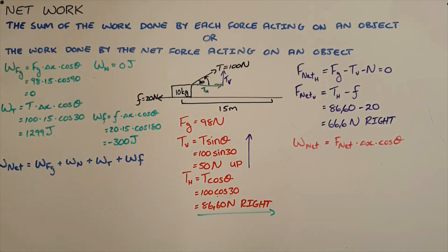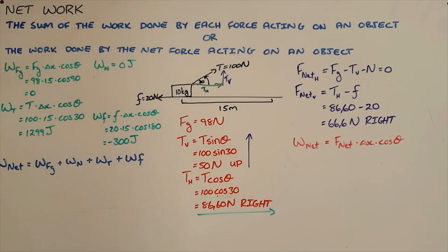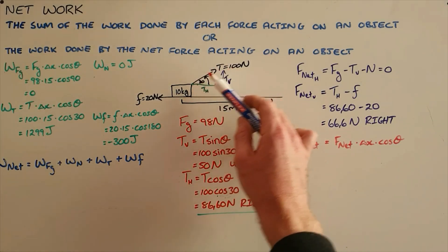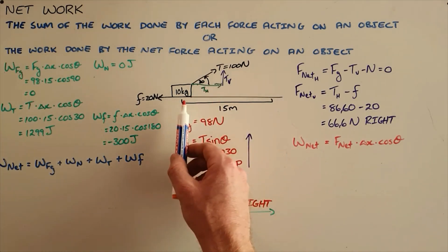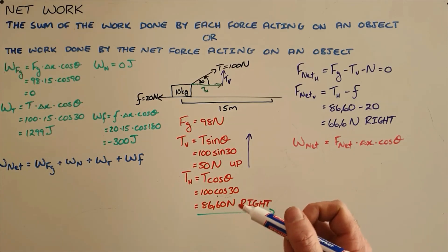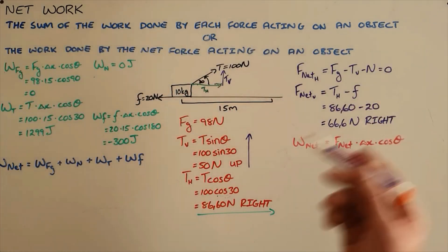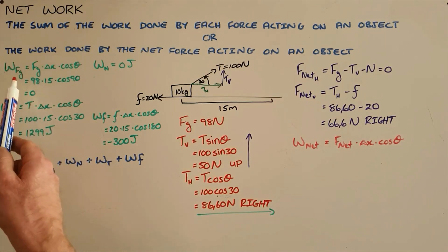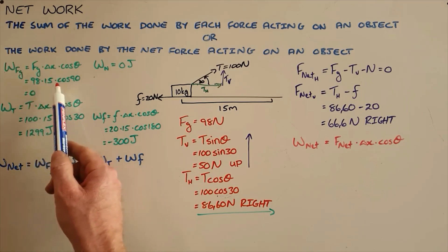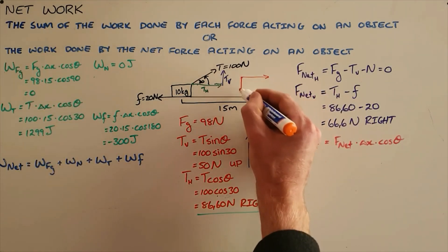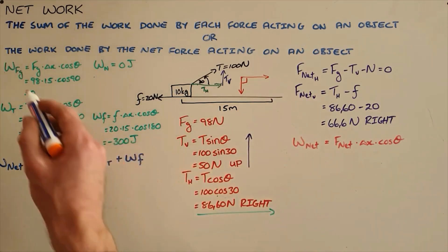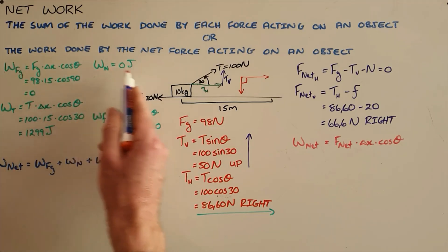Once we understand how work applies for individual forces, it becomes important to understand how to calculate the net work done on an object. There are two methods. Using an example with a tension force of 100 newtons pulling an object 15 meters to the right with a frictional force of 20 newtons: the first method is to take the sum of the work done by each force. The work done by gravity is zero joules because gravity is perpendicular to the displacement. The same applies to the normal force.